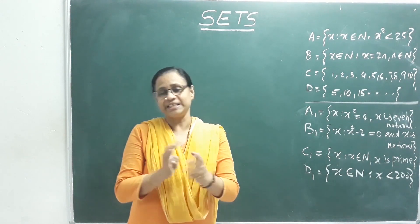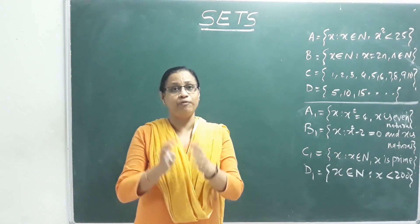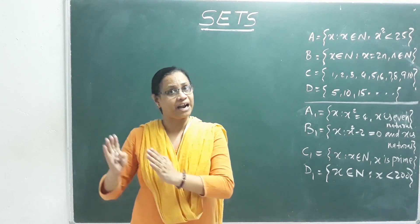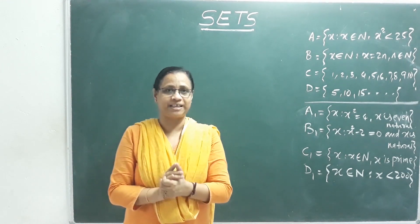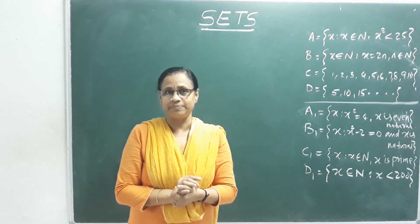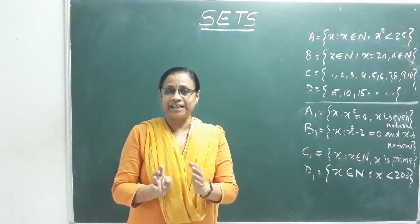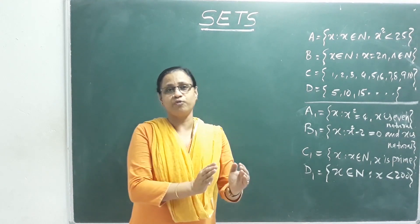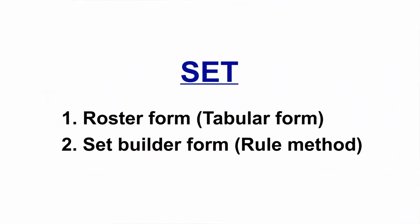So, what is a Set? A well-defined collection of objects. There are two ways to represent a Set: the Roster form (also called tabular form) and the Set Builder form (also called the rule method).